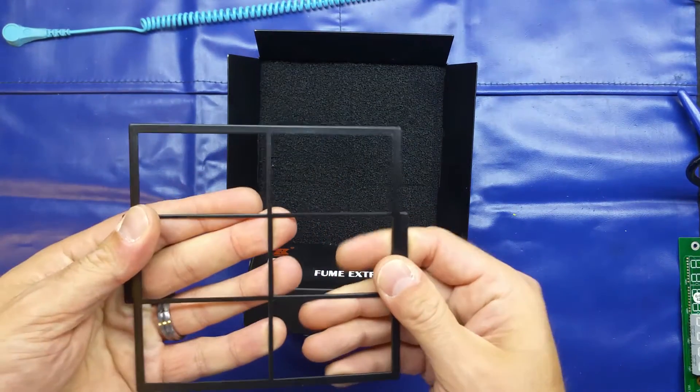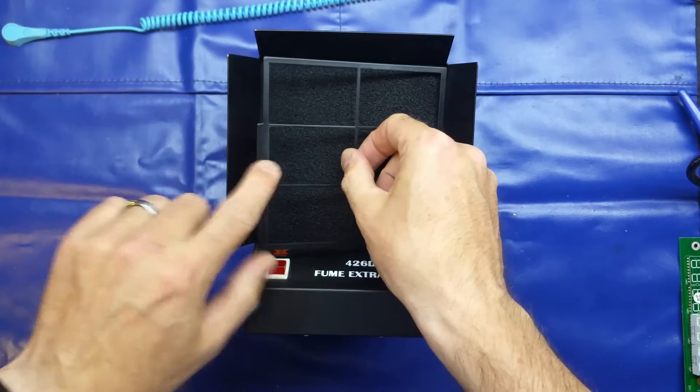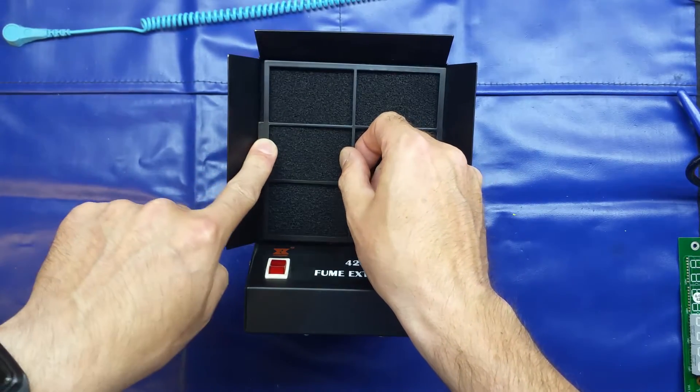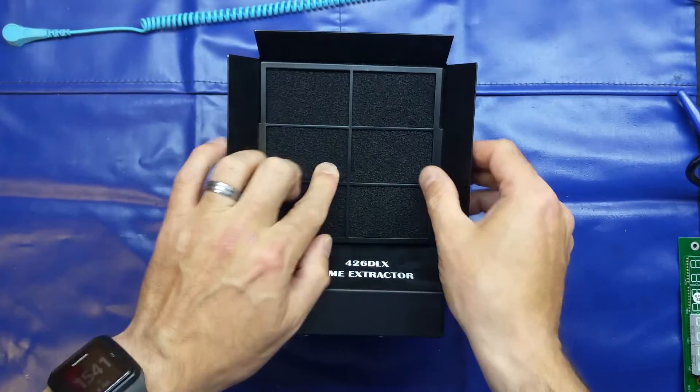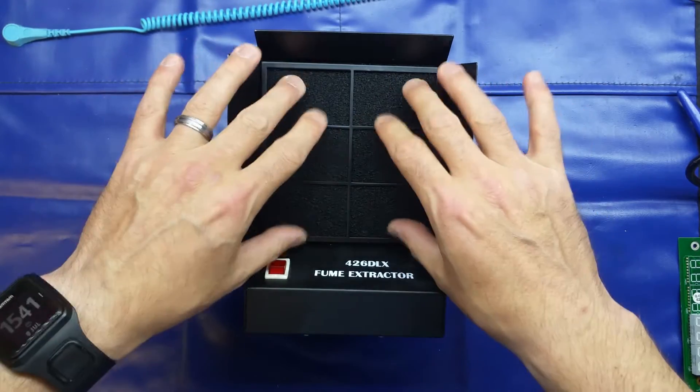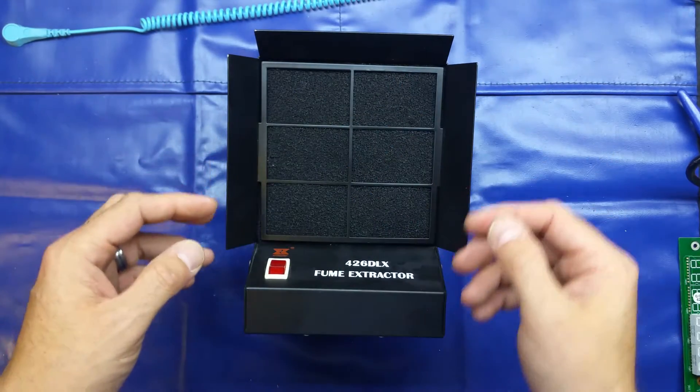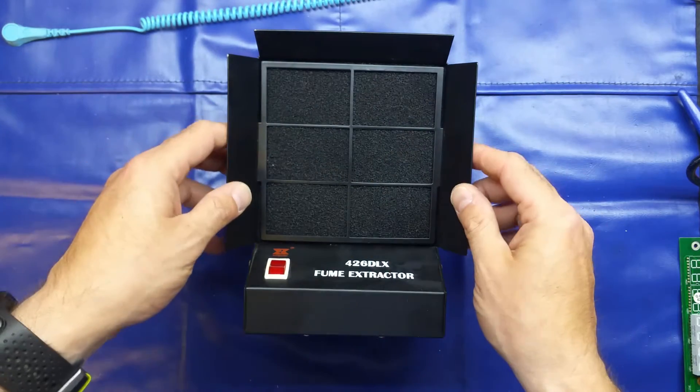To replace the grille, we simply insert one side into the slot, apply pressure on the other tab whilst pulling up gently in the middle, and that secures it nice and snug and gives it that seal, so it's maximum filtration as it's drawing the fumes through.